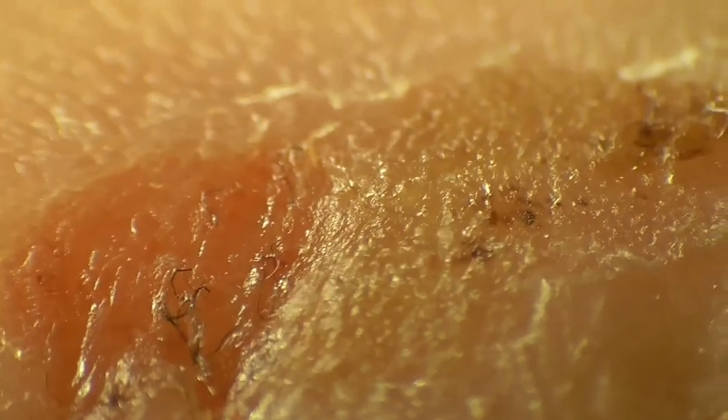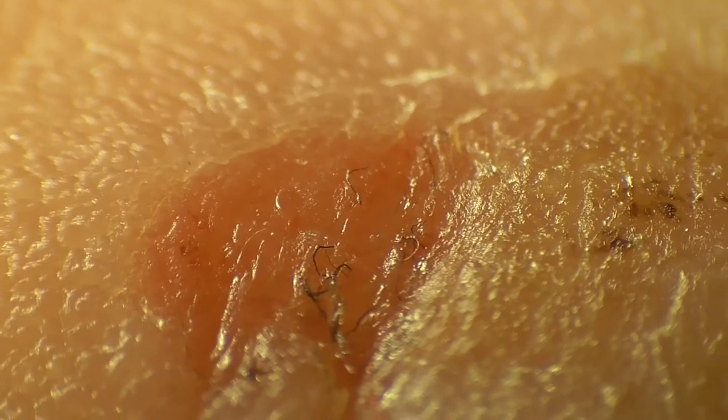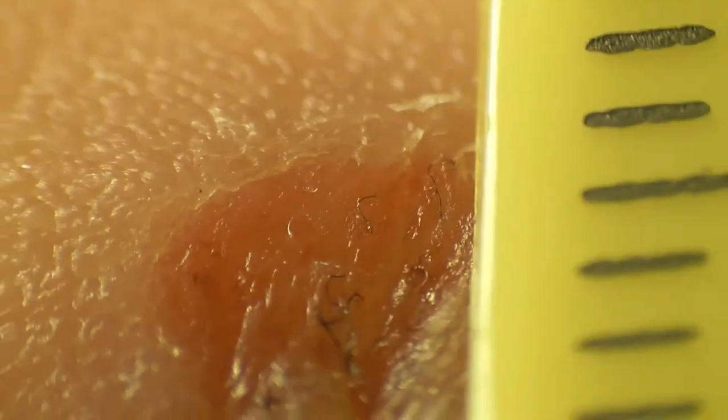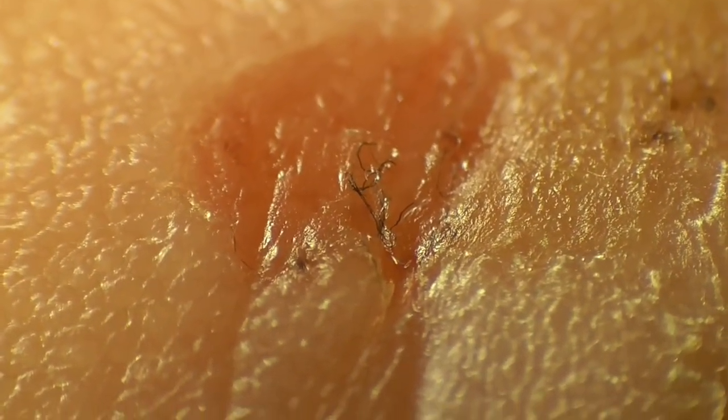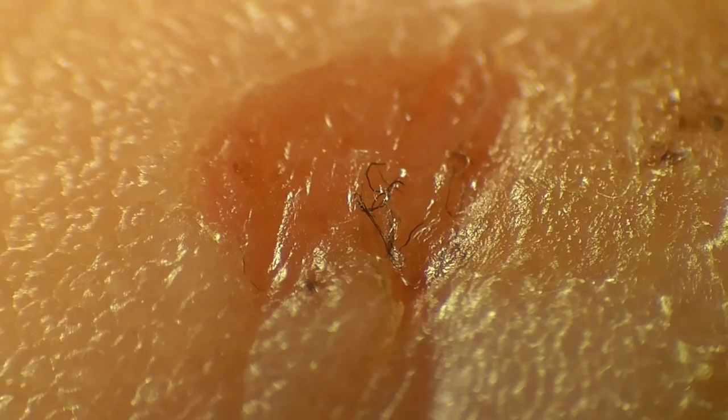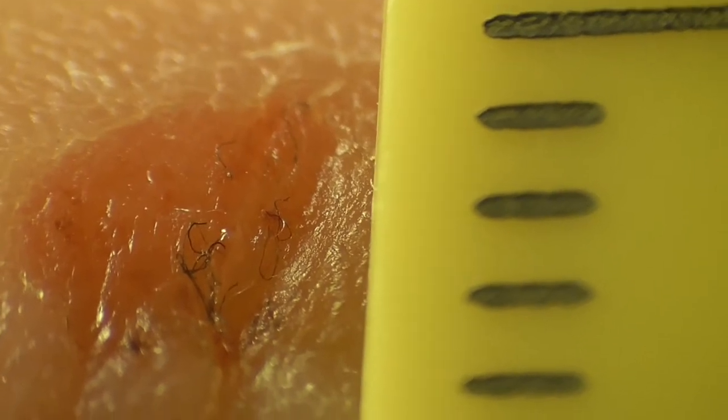Let me get the ruler to show you how small this is. Those Morgellons are about, let's say, one-fifth or one-sixth of a millimeter in thinness. And there's also the red one, see there—the red thread there. Let's hold the ruler a little bit more straight.